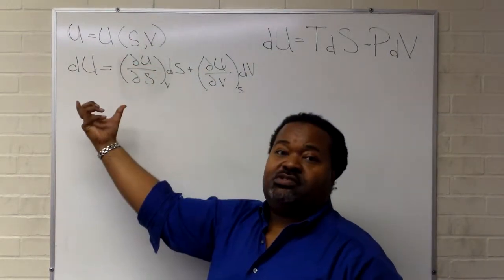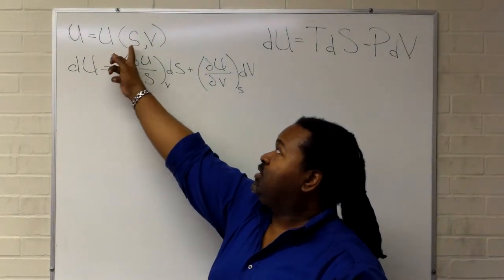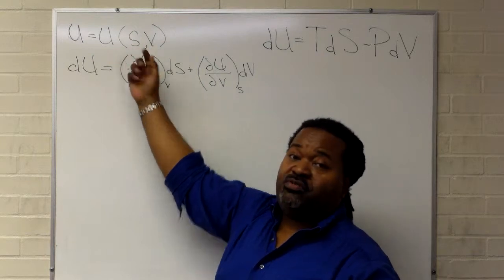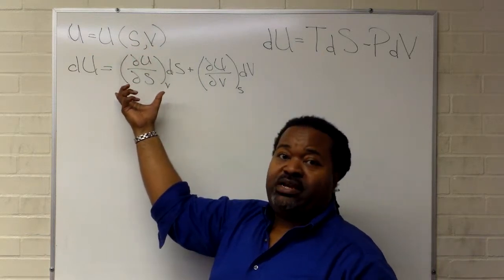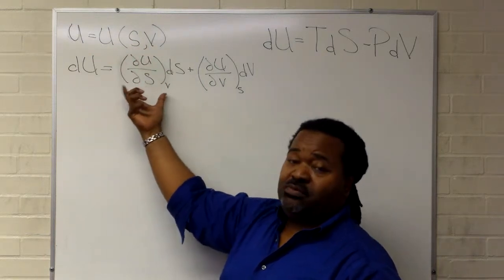Here we have the calculus version where we know that the internal energy is a function of entropy and volume, and so we're able to write out the total differential by using partials.